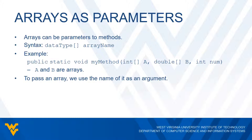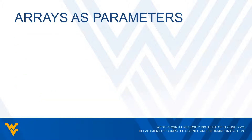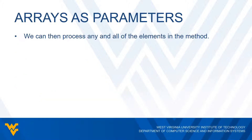If I want to pass an array, we use the name of the array as an argument. Here's an example: I create an array called iList of 10 integers, dList which is an array of 15 doubles, and some other number. When I call myMethod, I just pass the names of the arrays — iList as the first argument, dList as the second, and number as the third. Once we've passed our arrays into parameters, we can process any and all elements in the method, the same as anywhere else.